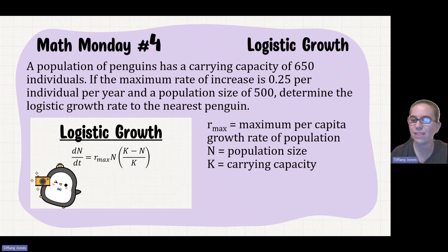A population of penguins has a carrying capacity of 650 individuals. If the maximum rate of increase is 0.25 per individual per year and the population size is 500, determine the logistic growth rate to the nearest penguin.